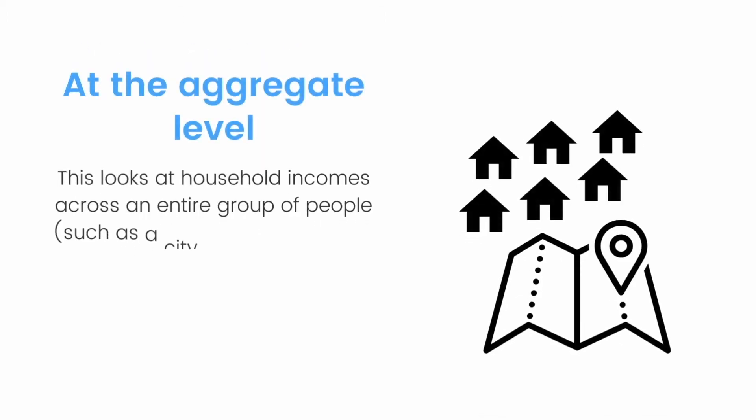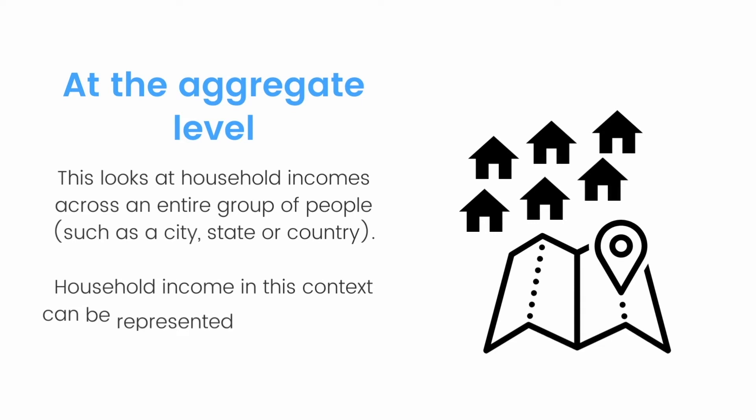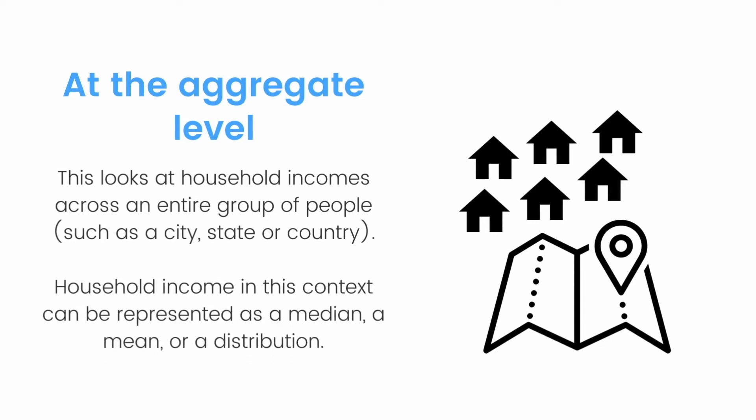At the aggregate level, household incomes are looked at across an entire group of people — this could be a city, state, or even a country. Household income in this context is usually represented as a median, a mean, or a distribution.